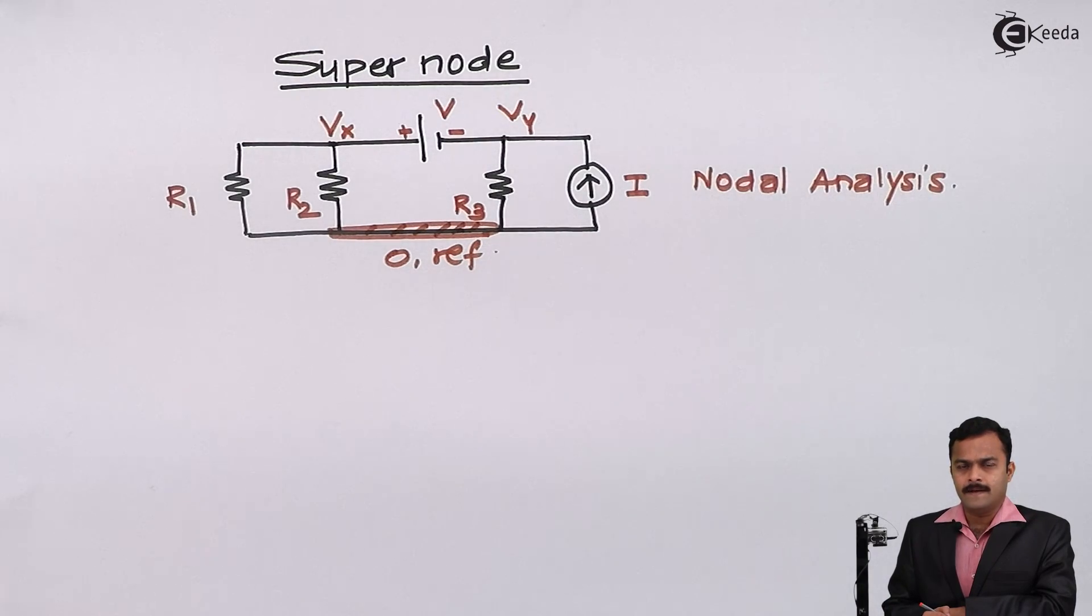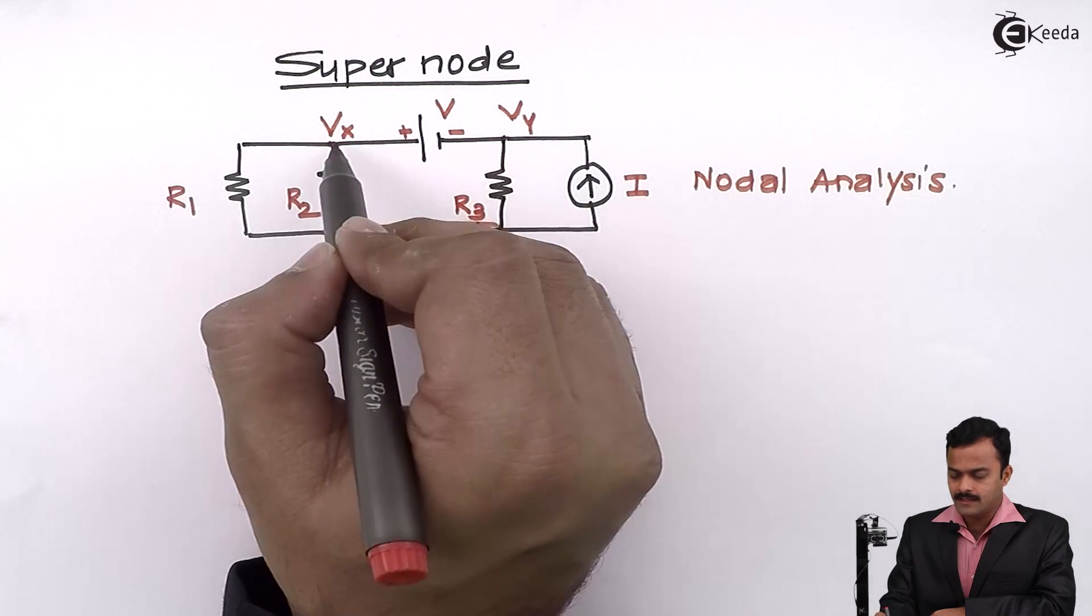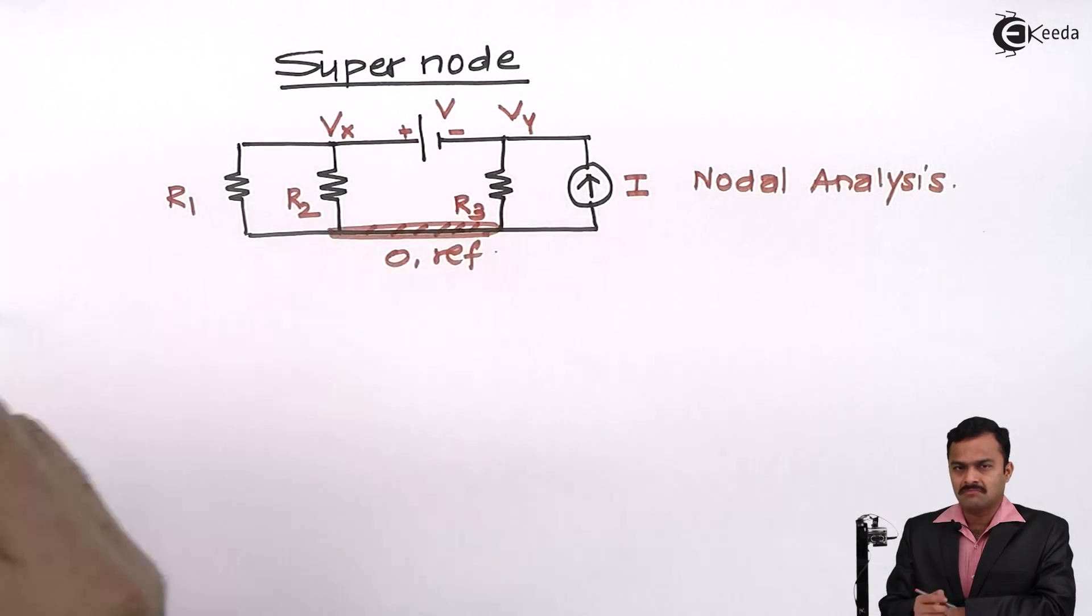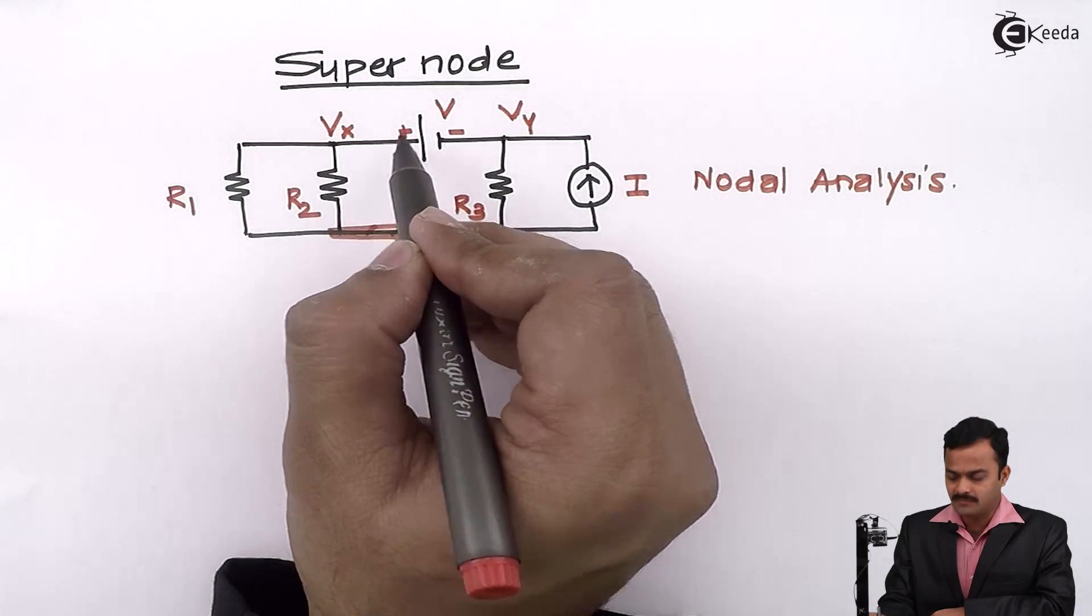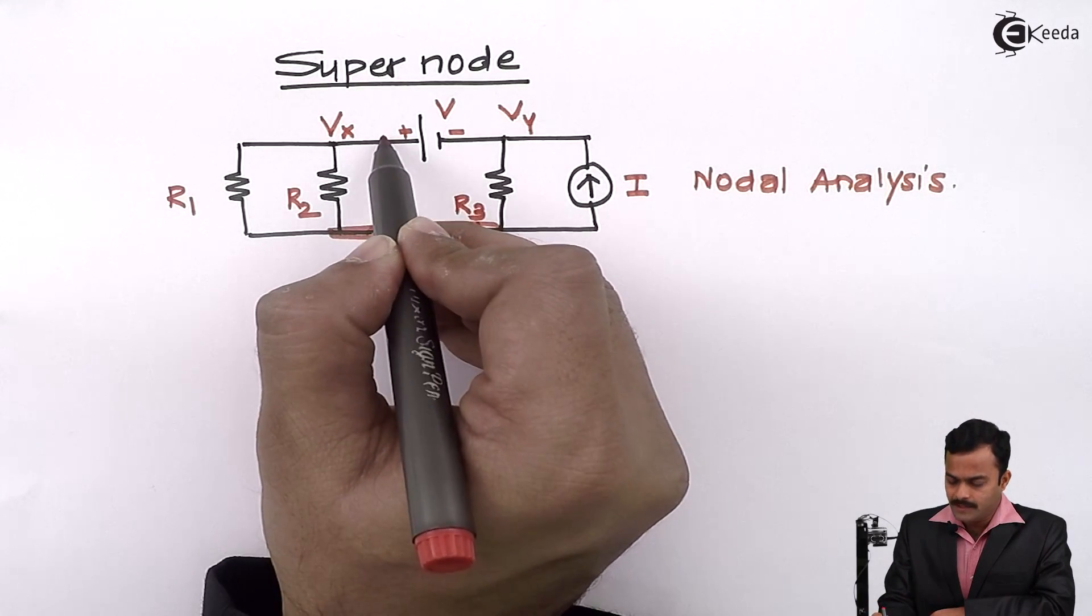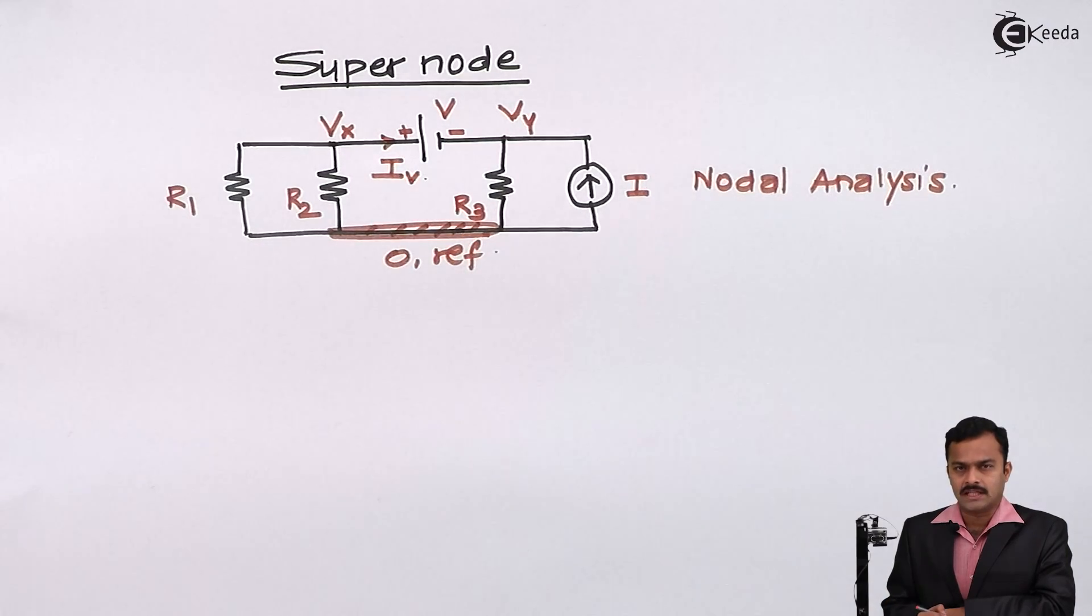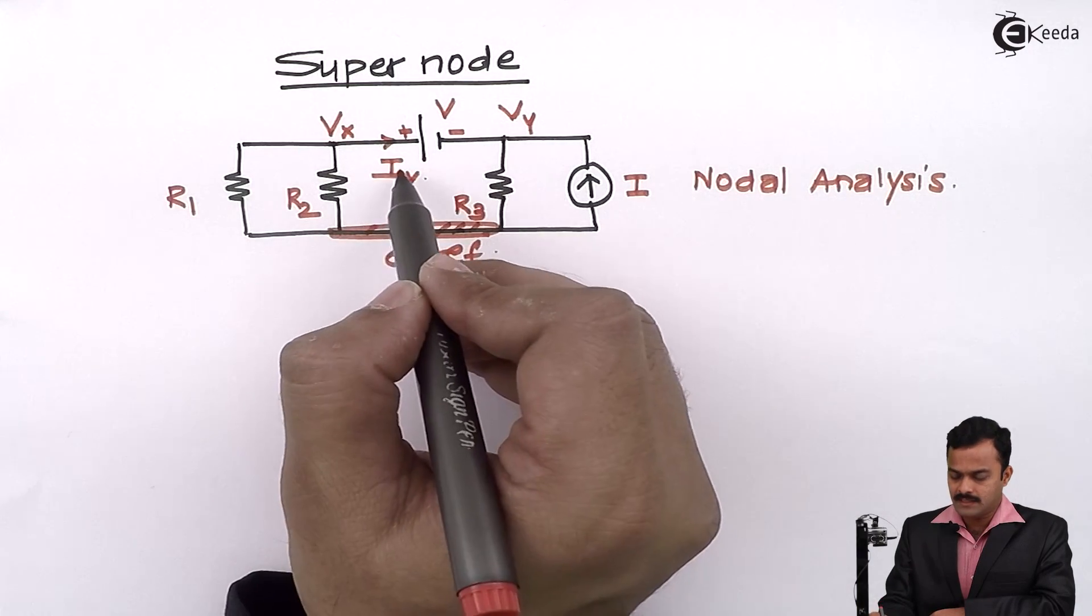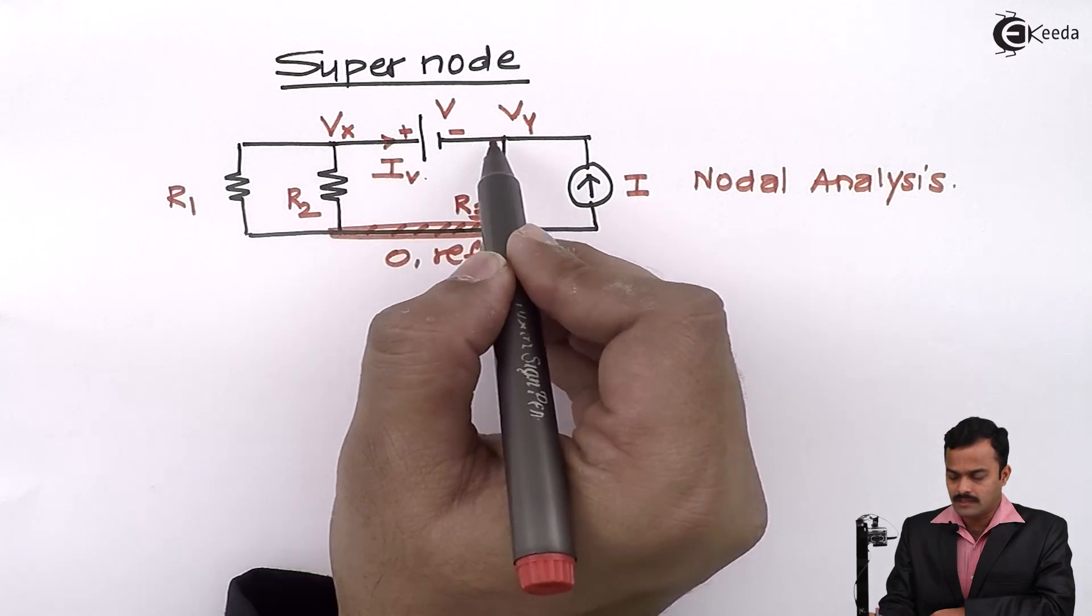Now here problem is I am not having any resistance connected in this branch. So if I write an equation, I may get an infinite. To avoid this, instead of writing an equation for this branch current, I will simply consider this as IV. Current flowing through this branch I mentioned as IV is nothing but current flowing through this voltage source.